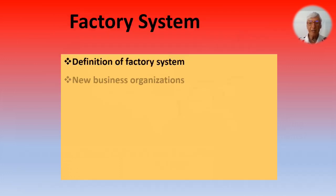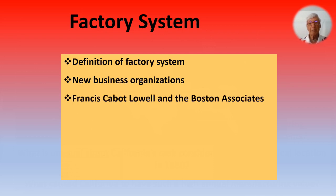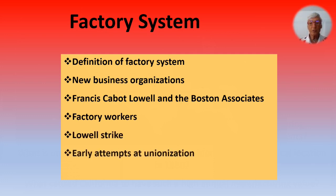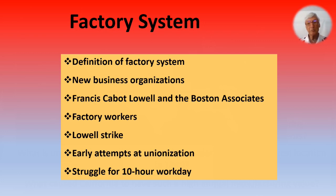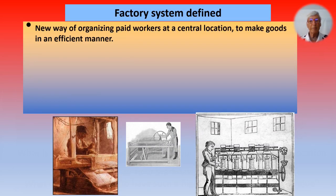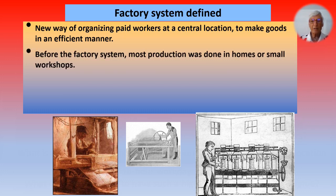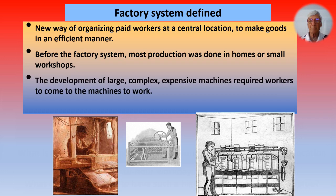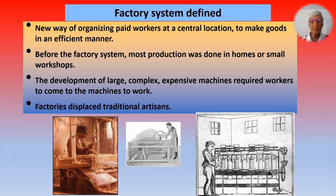The factory system — we're going to define it, talk about new business organizations, about Francis Cabot Lowell and the Boston Associates, about factory workers, the Lowell strike, early attempts at unionization, and the struggle for a 10-hour workday. In those days, even a 10-hour day would have been a breakthrough. The factory system was a new way of organizing paid workers at a central location to make goods in an efficient manner. Before the factory system, most production was done in homes or small workshops. The development of large, complex, expensive machines required workers to come to the machines to work, unlike previously when all of this was done in their homes.